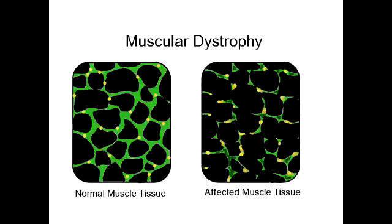What is muscular dystrophy? Muscular dystrophy is an inherited disorder that is marked by progressive weakening and wasting of the muscles.